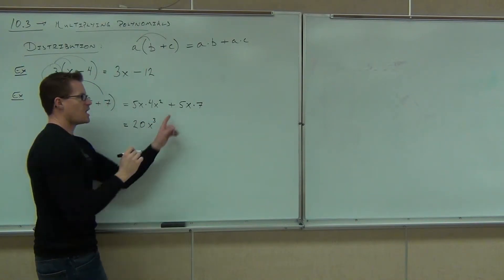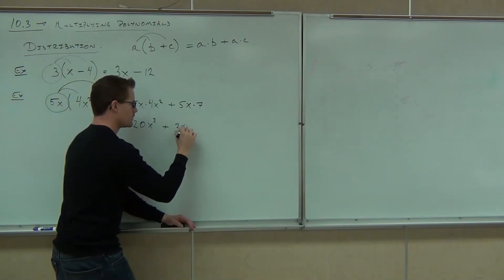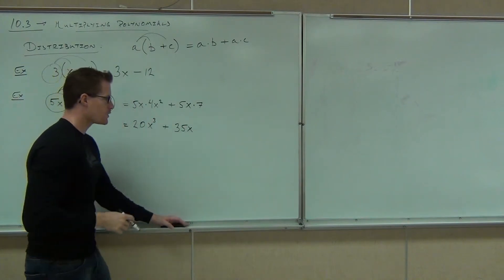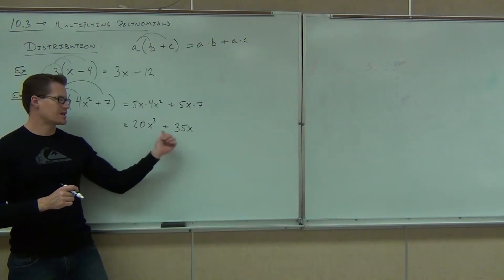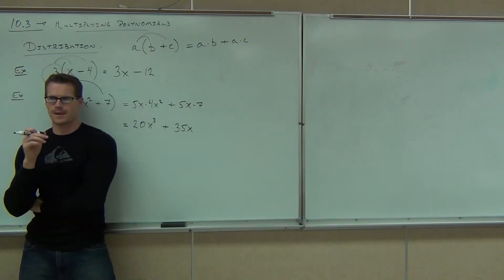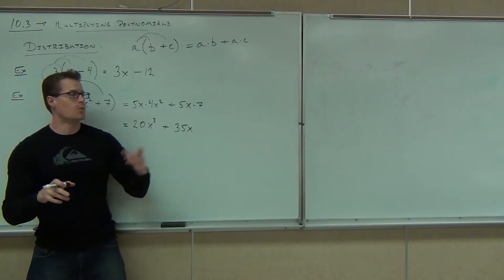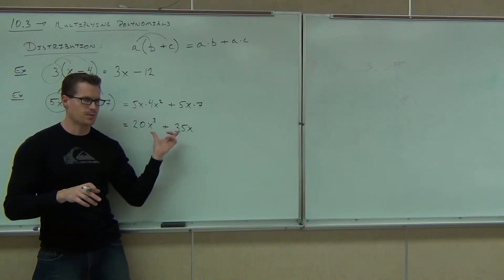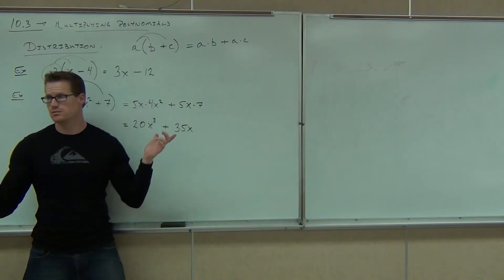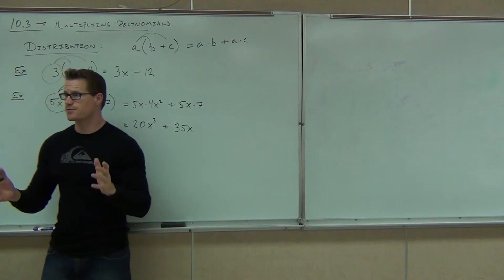Plus sign is still there. How about 5X times 7? That gives us 35X to the first power — we don't have to write the one. Last question: can you combine 20X cubed and 35X? Can you get something like 55X to the fourth? No. Are they like terms? No. You can multiply terms that aren't like terms, but you cannot add them. So you're done — that's your final answer. Can you multiply things that don't look the same? Yes. Can you add them? No. That's where the difference comes in.